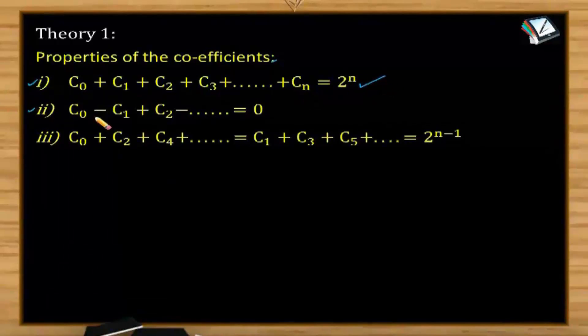Property number 2: C0 minus C1 plus C2 and so on, taking plus and minus alternatively, the sum becomes 0.